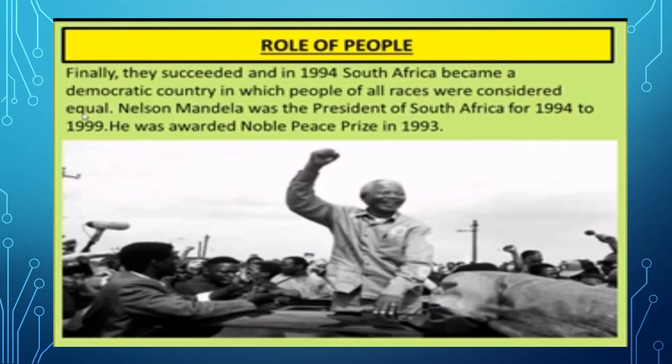A democratic government is a government which is elected by the people of the country. It symbolizes the rule of the people, as the government derives its authority and legitimacy from the people. There are many forms of democratic government, however there are certain basic features common to all. One of them is participation. The policy of apartheid in South Africa prevented non-Europeans from participating in the day-to-day working of the country. Participation ensures that people are aware of their decisions and their rights.